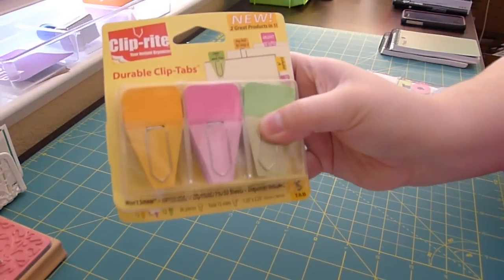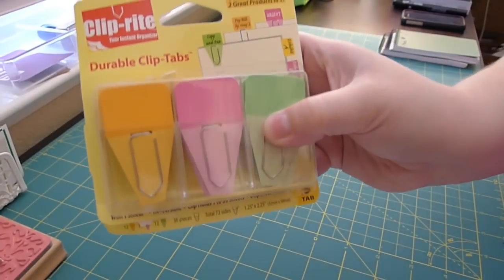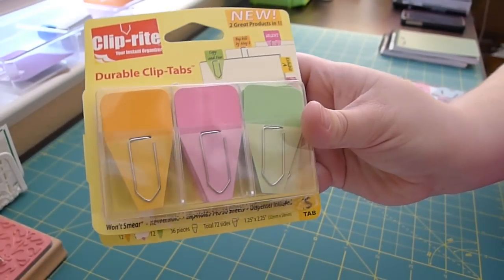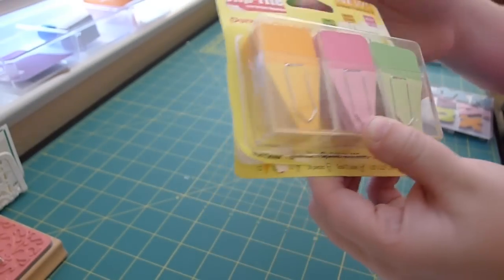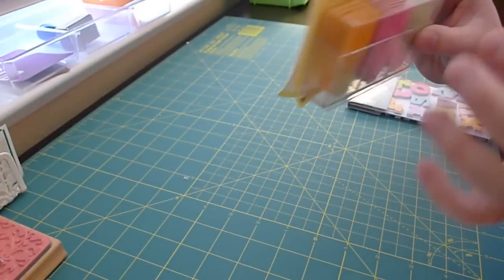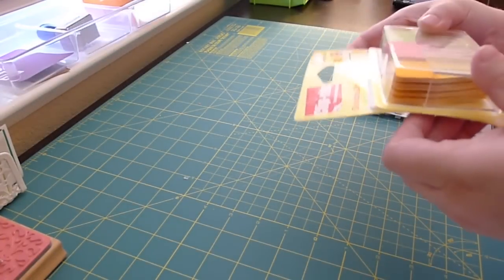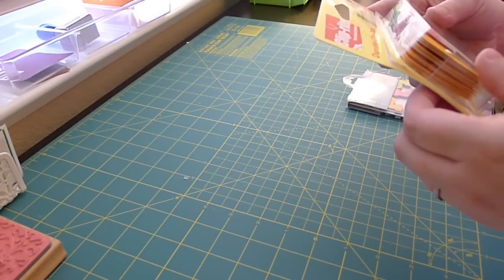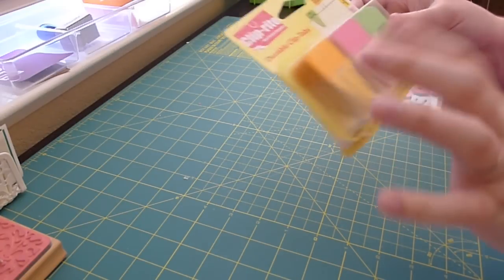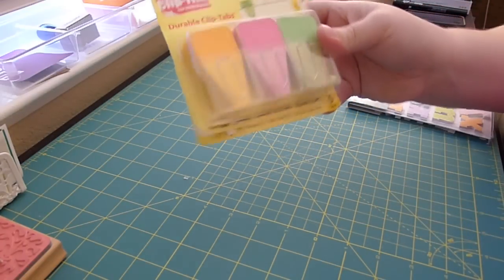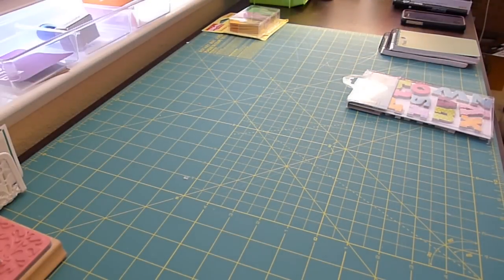I got this for my smash book. It is little clips, and you can write on the tops here, and I use it on my smash pages, and there's quite a few of them. There's 12 of each color, so there's 36 in here. And they're really good clips.